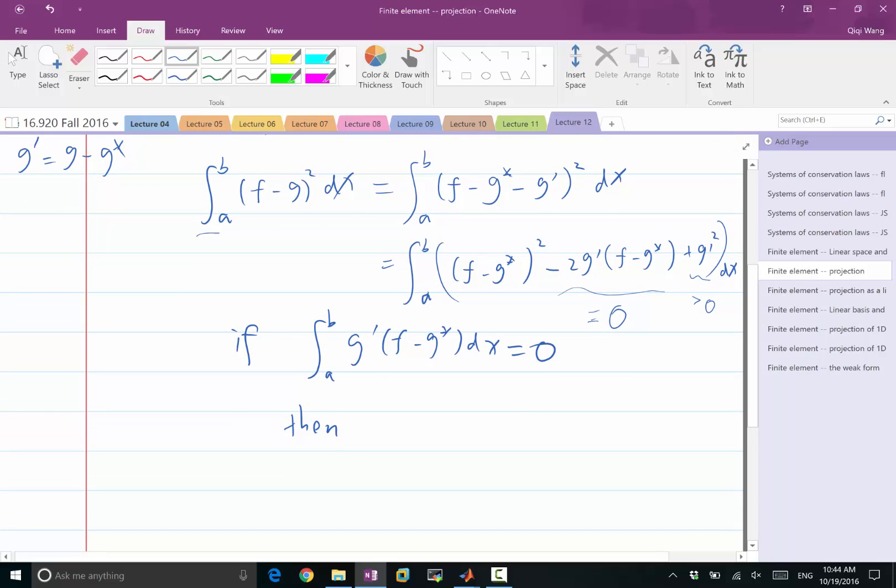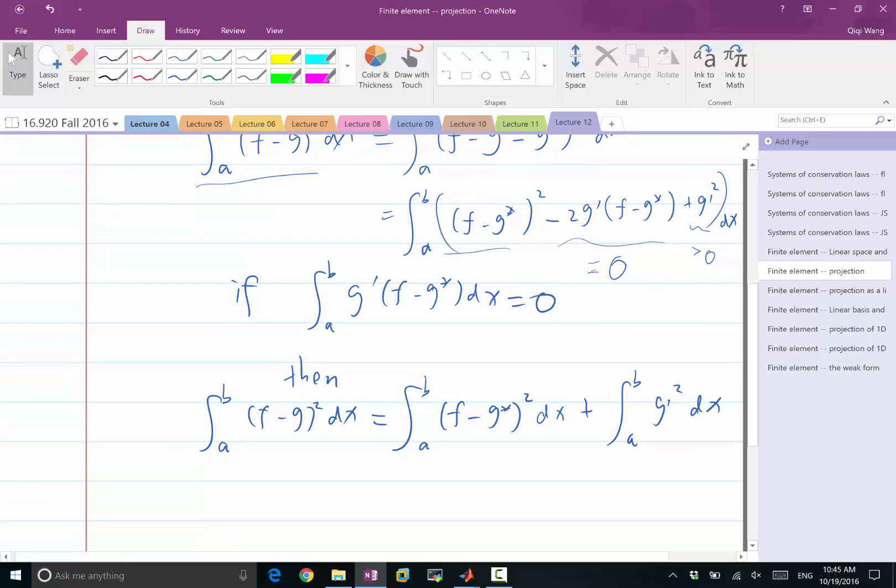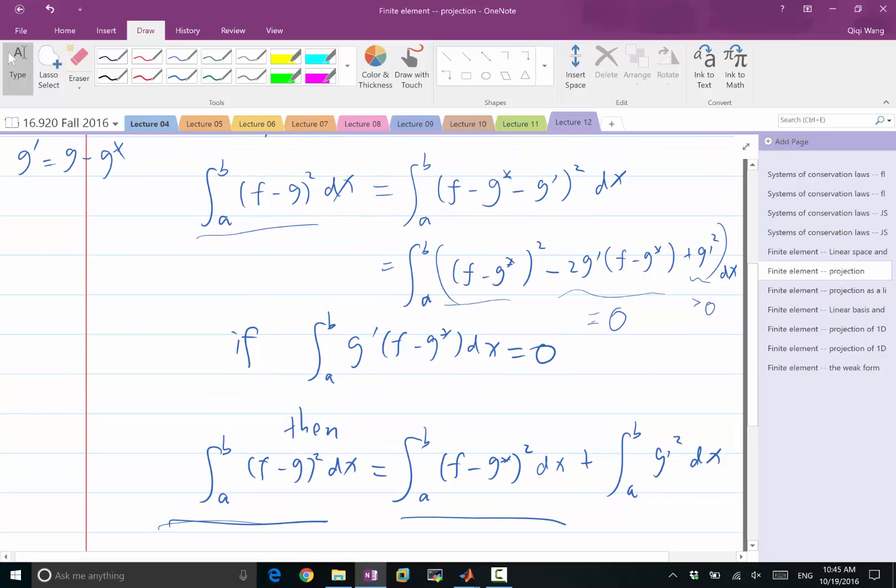And you can see that this term, because of g prime square integrated, is always greater than 0. So as long as I can make the second term to be equal to 0, so if integration of a times g of g prime times f minus g star dx is equal to 0, then the left-hand side is always greater than this. And this is always greater than this, and it is only equal when g prime is equal to 0 everywhere, almost everywhere.